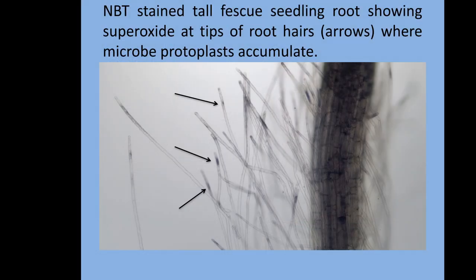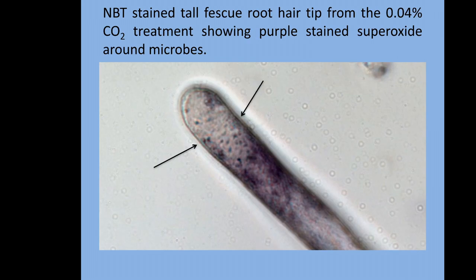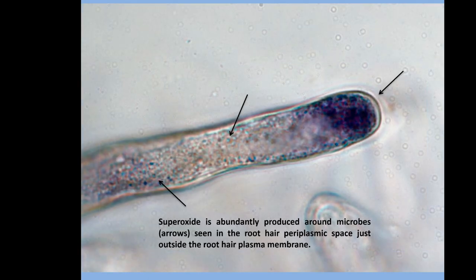This root is stained for superoxide — you see the hairs and this blue staining, which detects superoxide. These are concentrations where bacteria are located, so you can see where the superoxide is. In this close-up you can see these little blue dots — those are protoplasts of our bacteria that the plant is actually digesting inside the root.